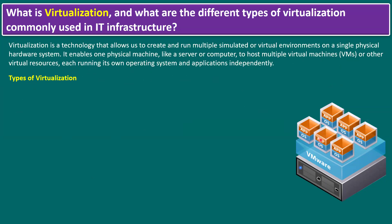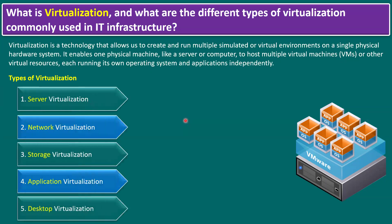So we can create VM1, VM2, VM3, and so on — this is called virtualization. Within virtualization, we have multiple types. There are five types: server virtualization, network virtualization, storage virtualization, application virtualization, and desktop virtualization.